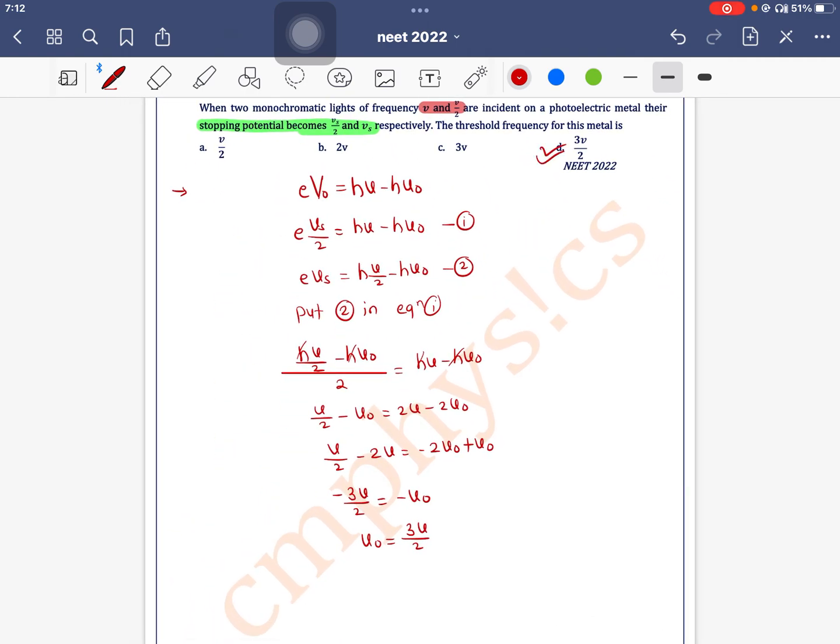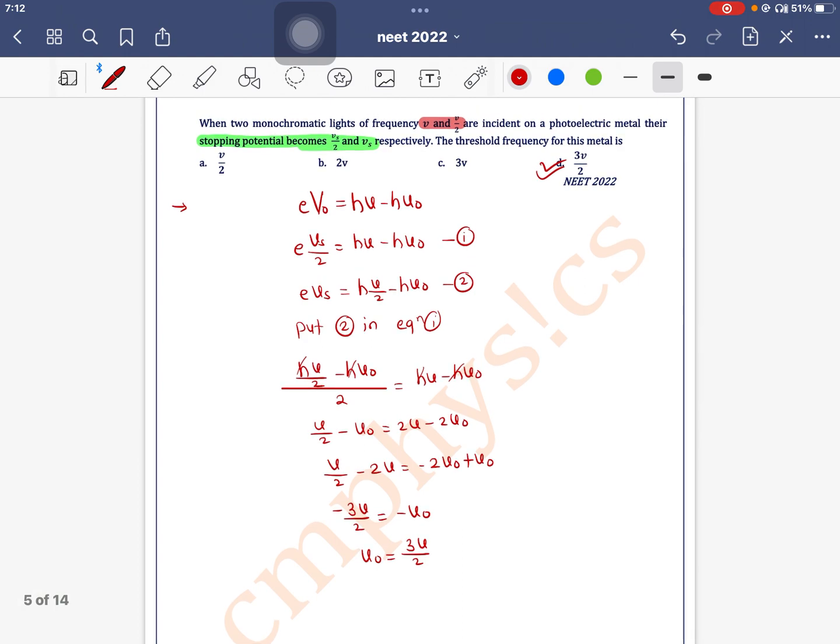3 nu by 2 means option D is the correct one. So let's write in focus. You're not... excuse me, thank you.